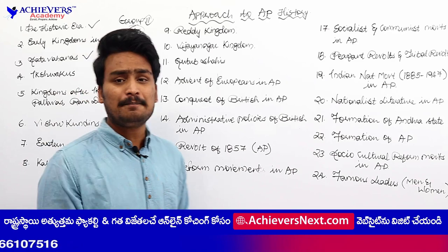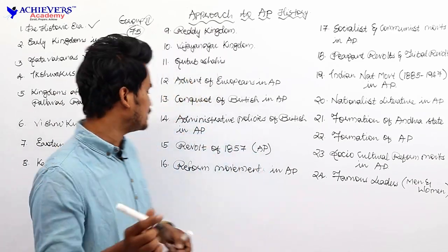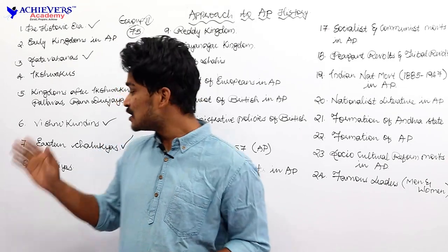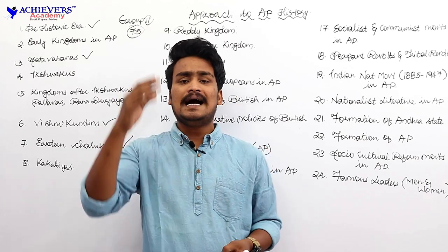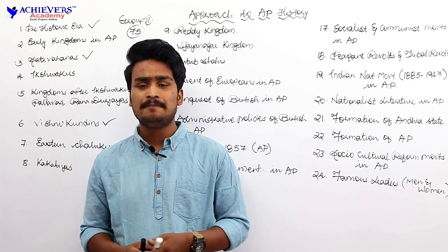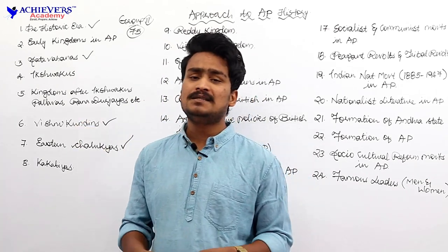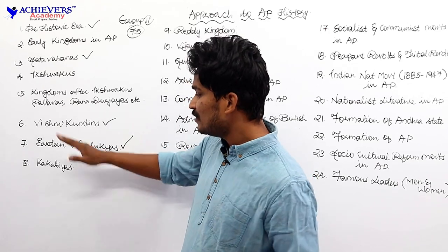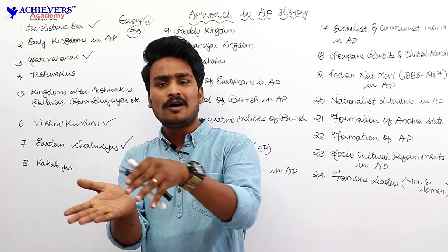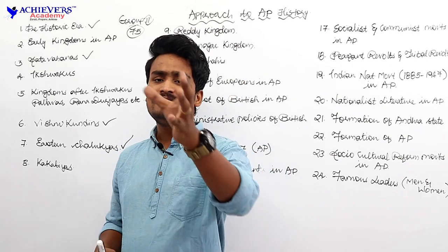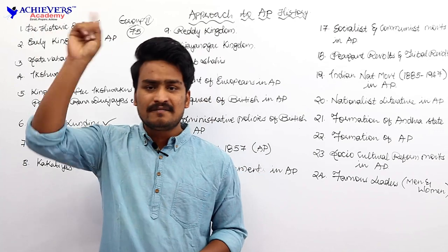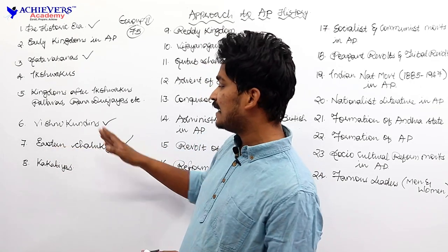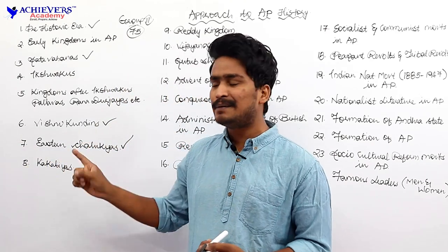After Vishnu Kundins, another major kingdom which ruled the majority part of Andhra Pradesh is Vengi Chalukyas. Vengi Chalukyas would be the most important part of Andhra Pradesh history. The founder of this Vengi Chalukyan dynasty is Kubja Vishnu Vardhana. Vengi Chalukyas are also called Eastern Chalukyas. They were an offshoot of Western Chalukyas — the Badami Chalukyas — whose famous ruler was Pulakesi 2.